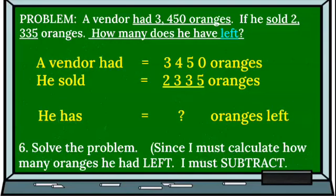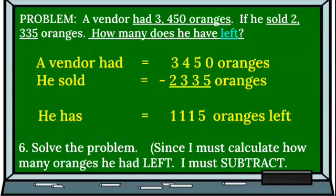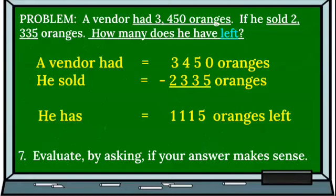Now we have to solve the problem. Since I must calculate how many oranges he had left, I must subtract. So I'm going to subtract how many he started with by how many he sold. And when I subtracted how many he sold from how many he started with, I have 1,115 oranges left.